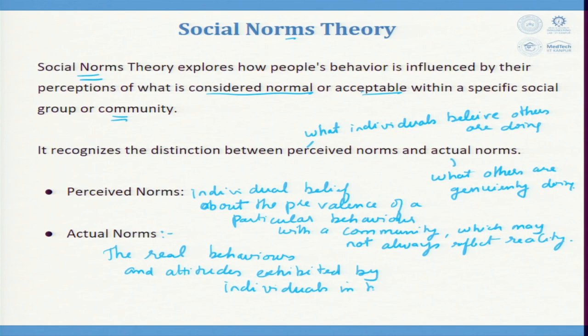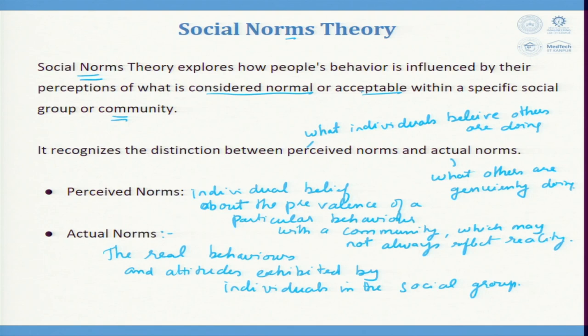Actual norms are the real individual behavior and attitudes exhibited by individuals in a social group. This makes a big difference. Perceived norm is what individuals believe about the prevalence of a particular behavior within a community, which may not always reflect reality. Actual norm is the real behavior and attitudes exhibited by individuals in a social group.